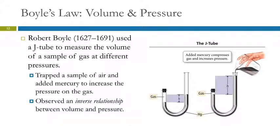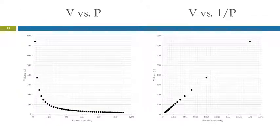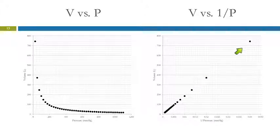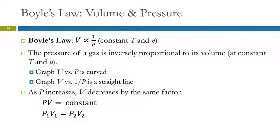That's an inverse relationship — one goes up, the other goes down. If you graph volume versus pressure, you get a curve, and curves aren't ideal for linear regression. But if instead you graph volume versus the reciprocal of pressure, one over pressure, you get a beautiful straight line whose y-intercept is zero. So Boyle's Law tells us that the volume of a gas is inversely proportional to the pressure.